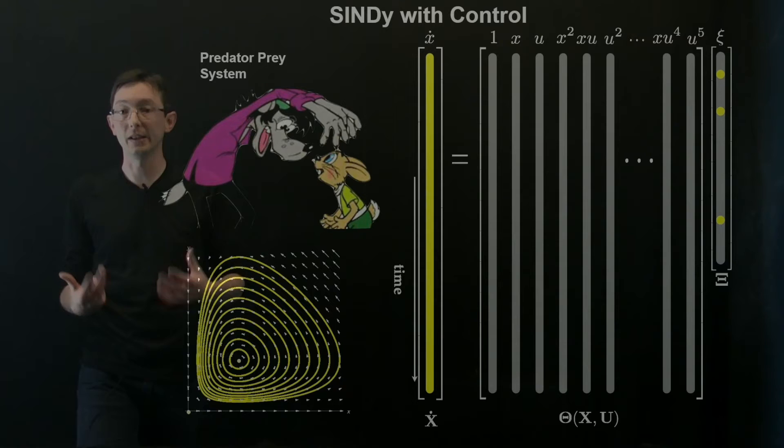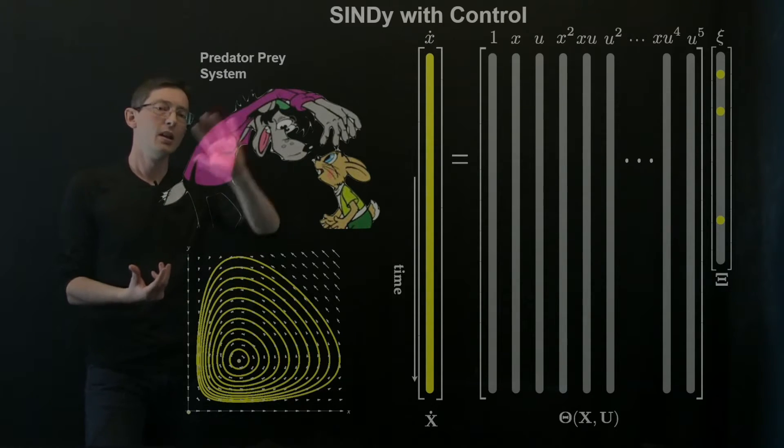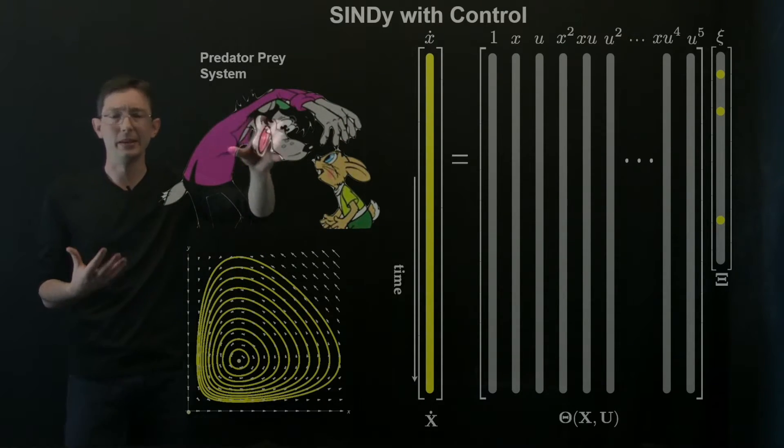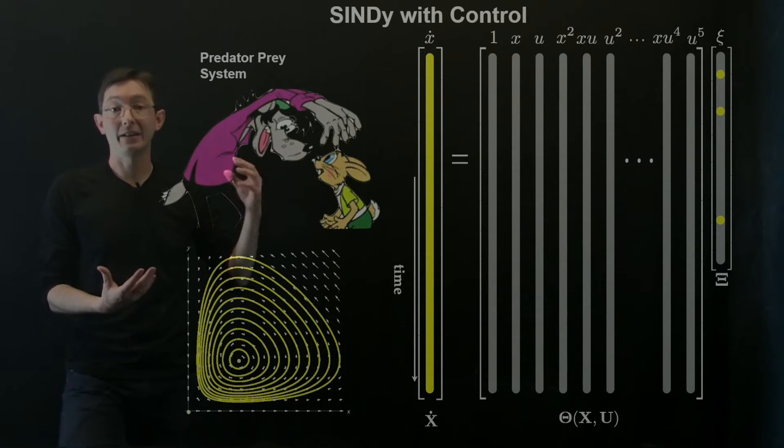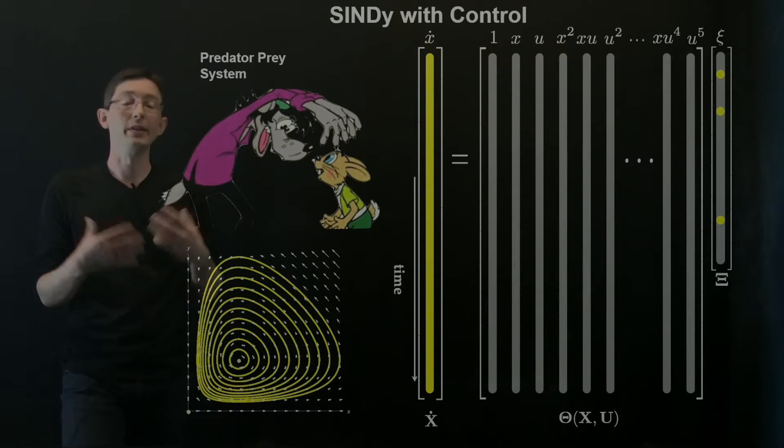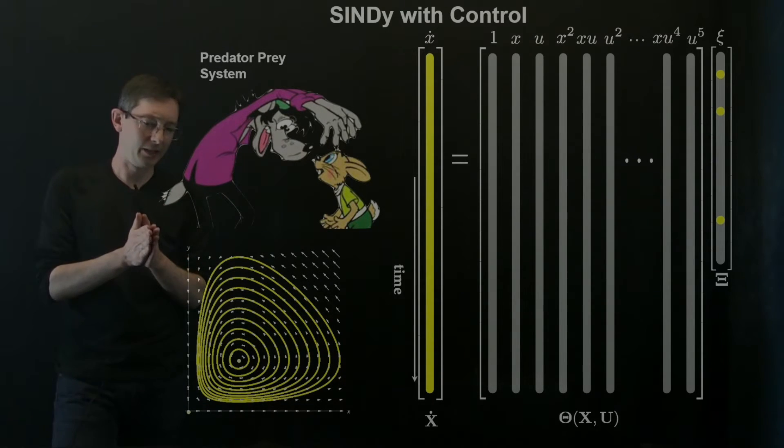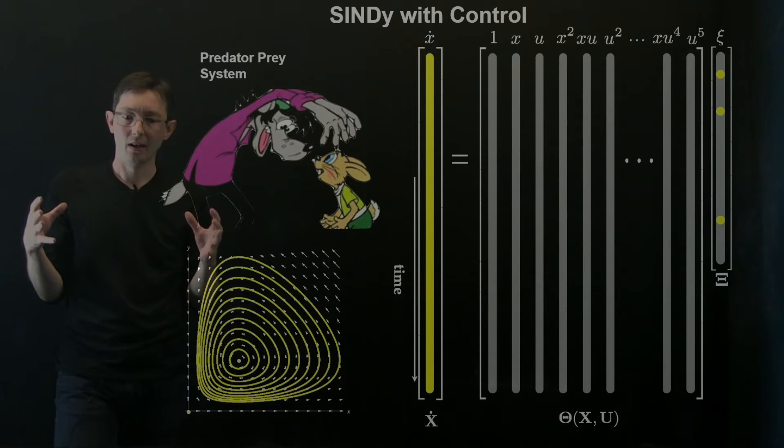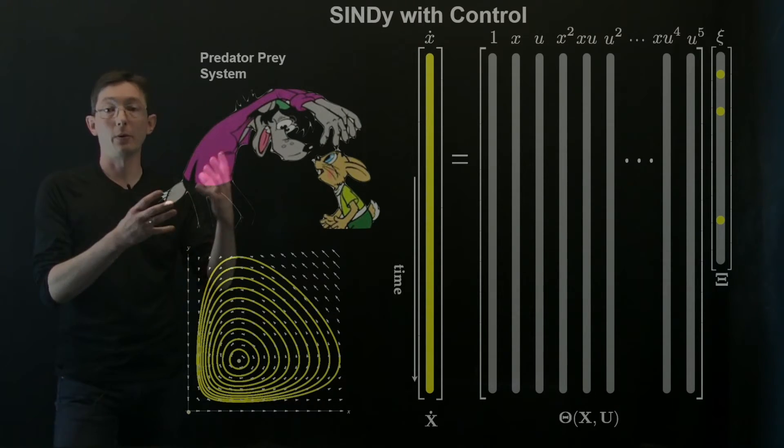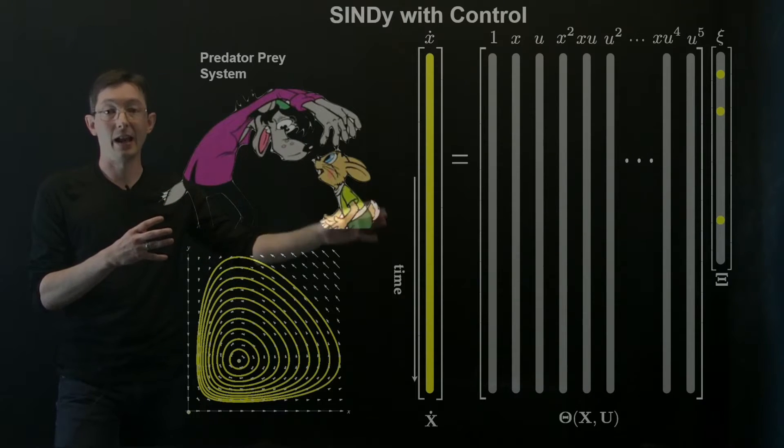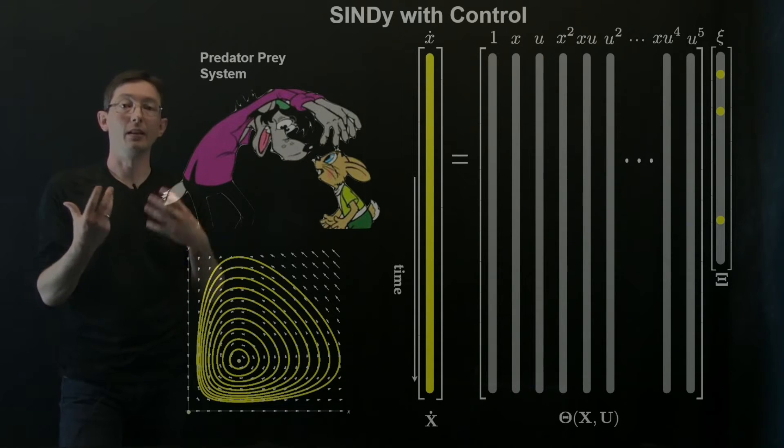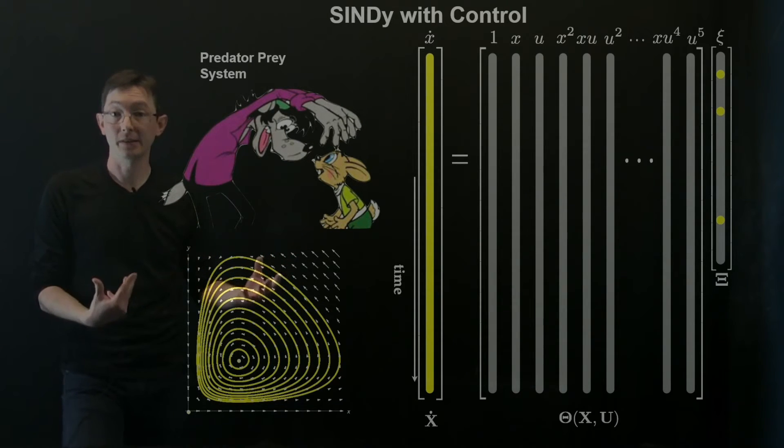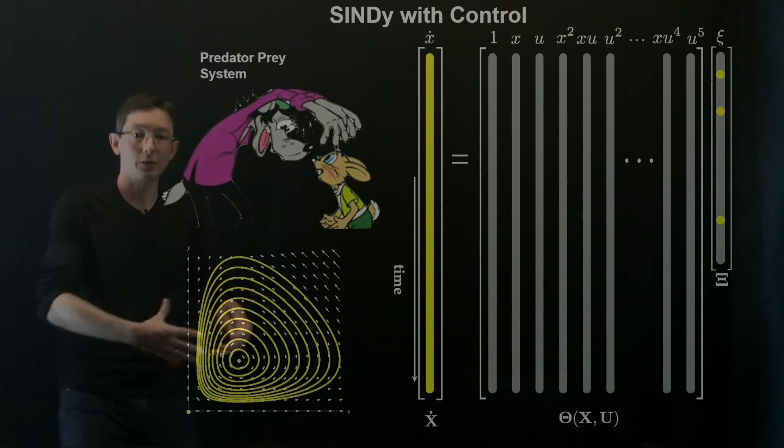That I'm actively modifying the system with some feedback control. So for example, in the case of population dynamics, maybe I'm actively going and hunting wolves. And this actually happened back in the, I think this was the Appalachia trapping records. They would, there were records of lynx and hare, so you had a predator and a prey, but they were actively trapping these animals for their pelts.